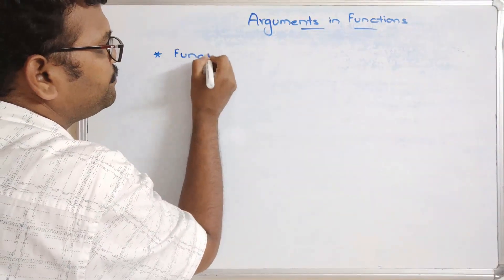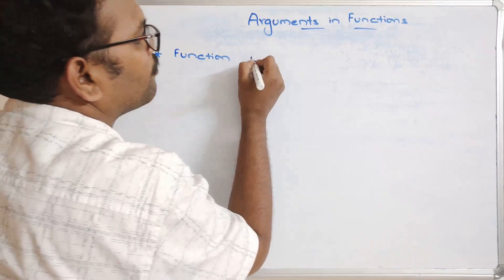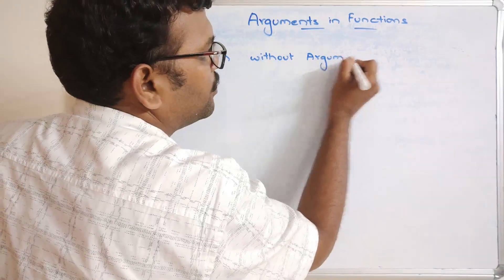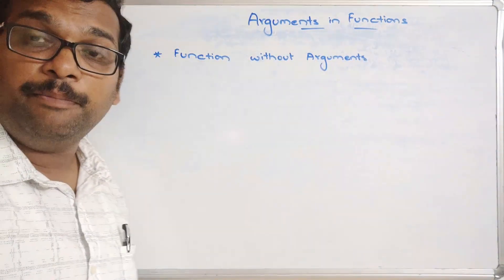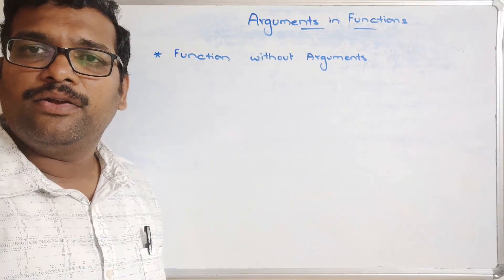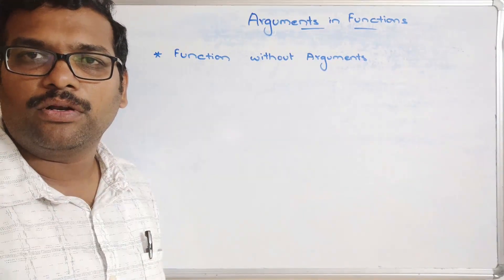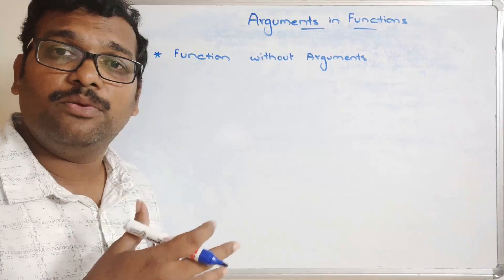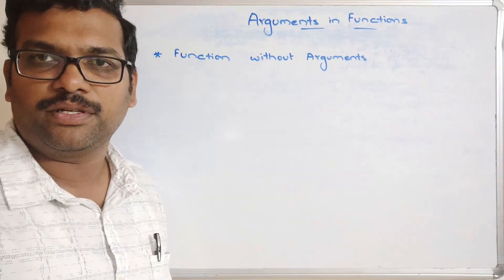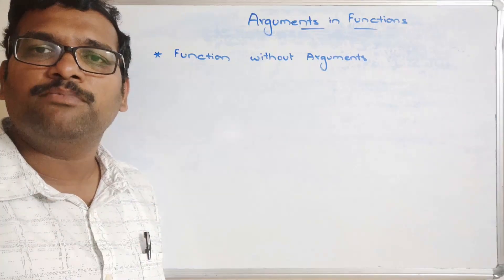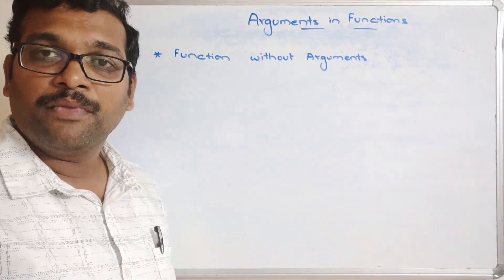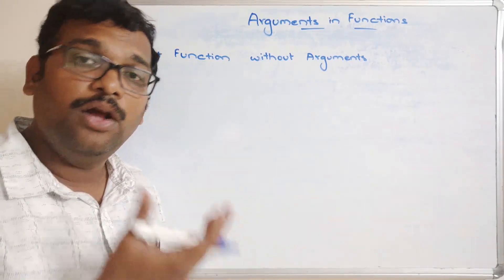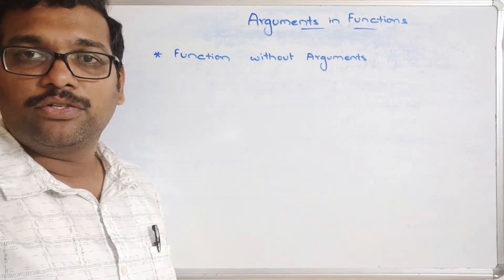The first category is function without arguments. That means it is not mandatory to give arguments from the function call — it is optional. Arguments are inputs given to the function definition. From the function call we give inputs to the function definition, but that is not mandatory. We need not pass input from the function call; we can take inputs inside the function itself.